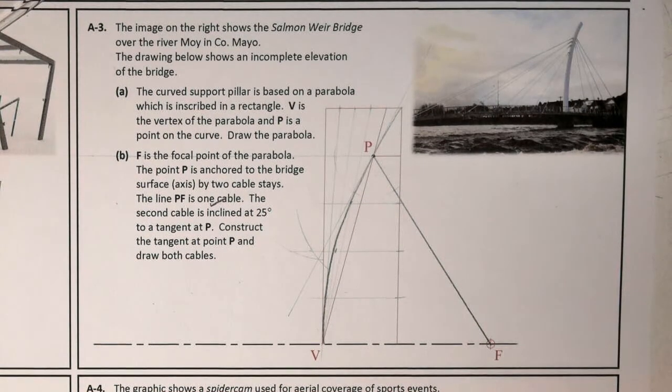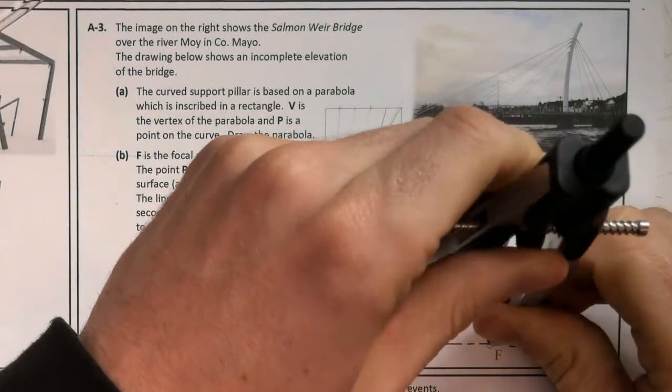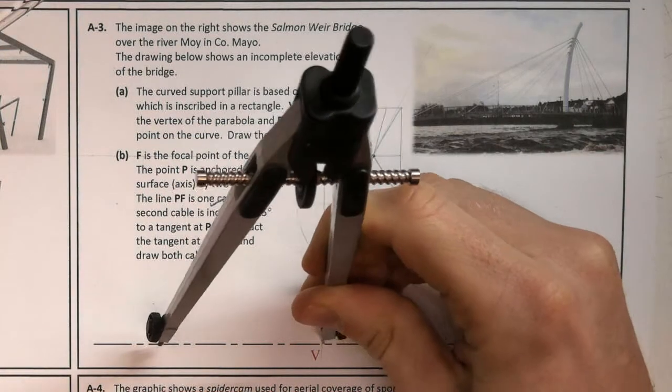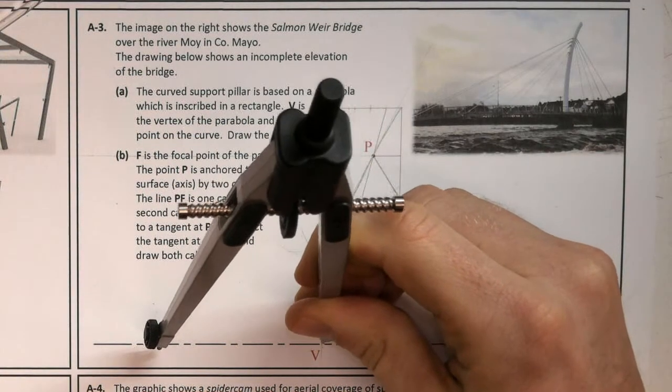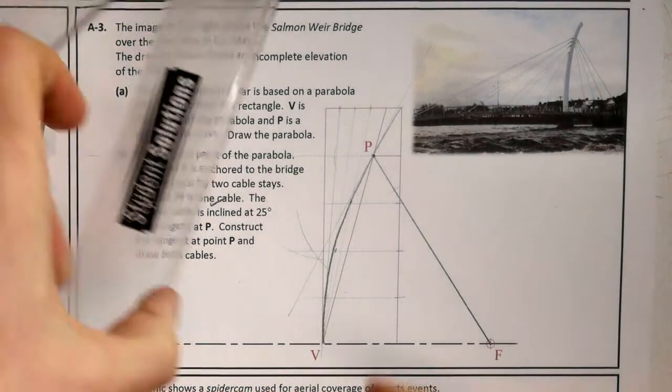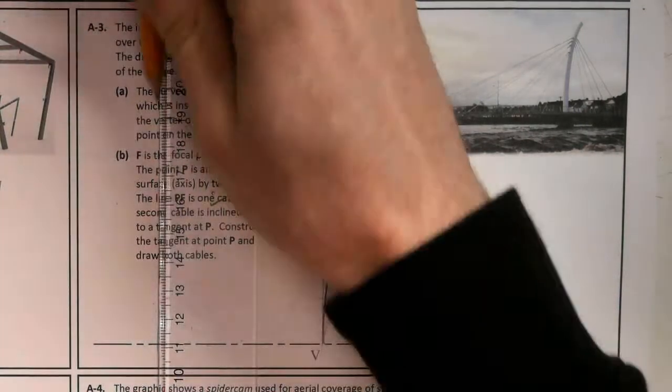The second method that you could use, it's probably a little bit more complex, you could find the directrix. So get that distance there and step it off. Because the eccentricity of a parabola is PF over PD equals one. So I could find my directrix there. Just draw it slightly just to show you.